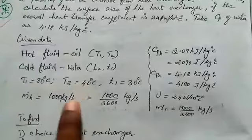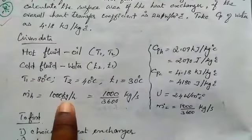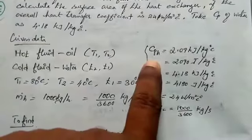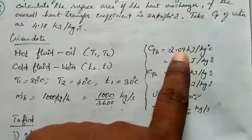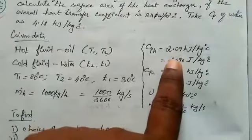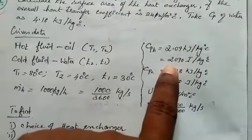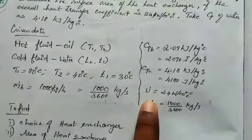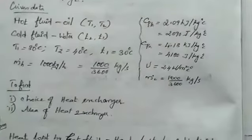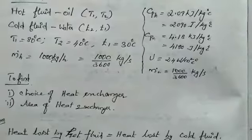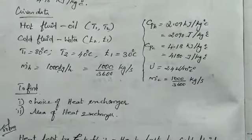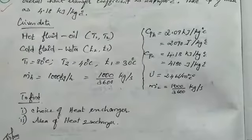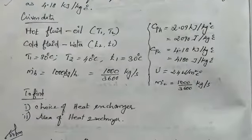Now we find small t2, delta Tm. Mass flow rate is 1000 kg per hour, which equals 1000 divided by 3600 kg per second. CP of hot fluid is 2.09 kJ per kg degree Celsius. We substitute values to get the answer in kilowatts.